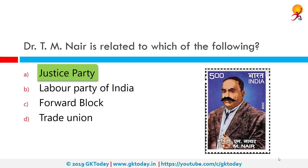Communal division between Brahmins and non-Brahmins began in the Presidency during the late 19th and early 20th century, mainly due to caste prejudices and disproportionate Brahminical representation in government jobs. The Justice Party's foundation marked the culmination of several efforts to establish an organization to represent non-Brahmins in Madras and is seen as the start of the Dravidian movement.